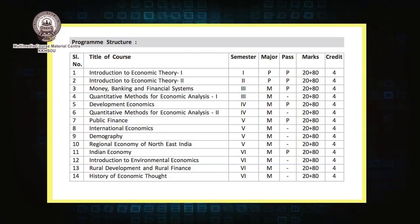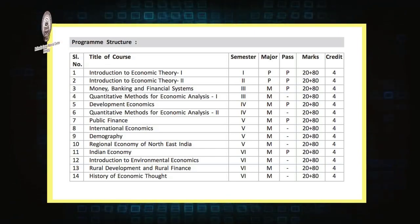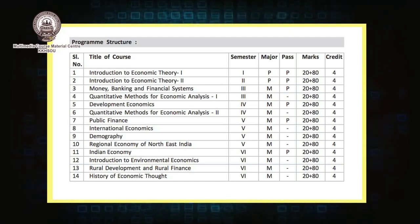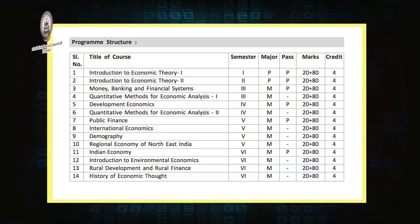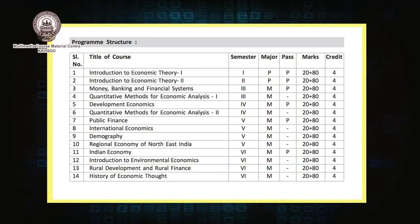In the fifth and sixth semesters, we have four papers each for major students and one paper for pass course students. The four papers for major students in the fifth semester are Public Finance, International Economics, Demography, and Regional Economy of India's Northeast. For pass course students, there is only one paper in the fifth semester: Public Finance.